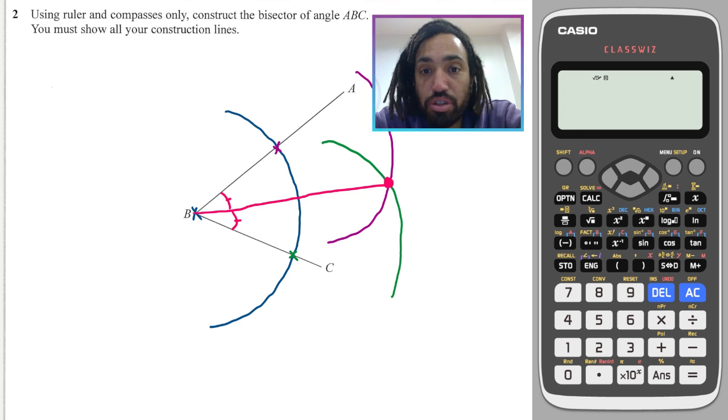And we're done. Two skills there that you need to learn. How to construct a perpendicular bisector. And how to bisect an angle. This topic doesn't come up very often. But now you know how to do it. Fantastic. Bye for now.